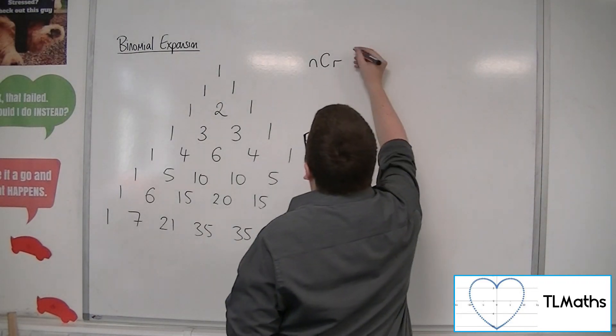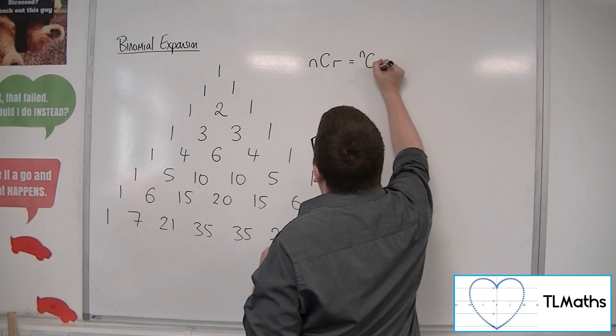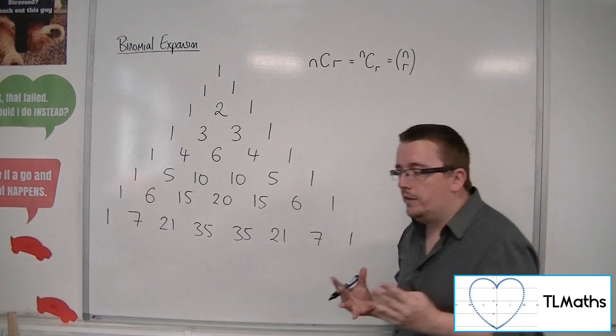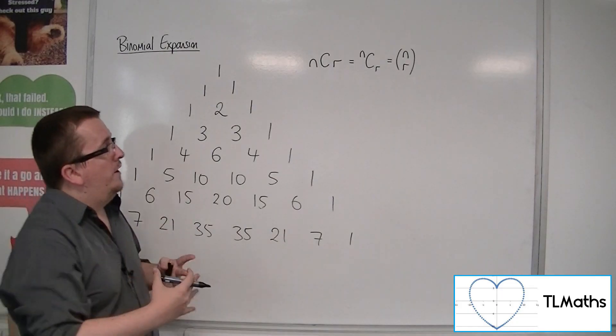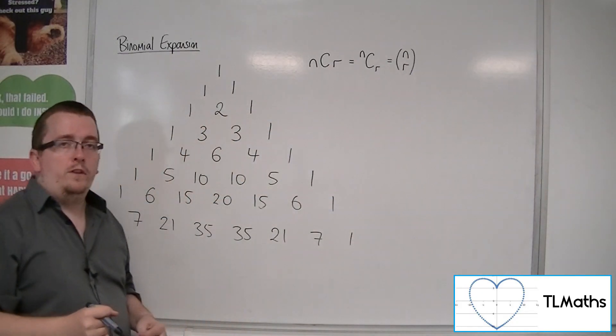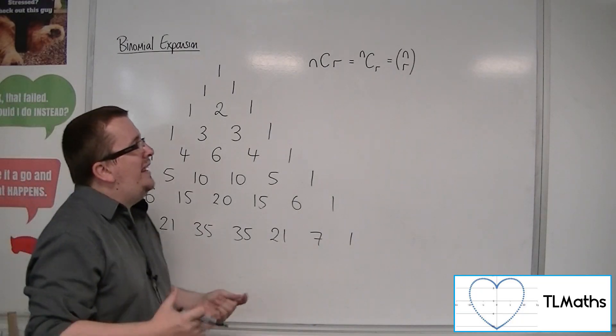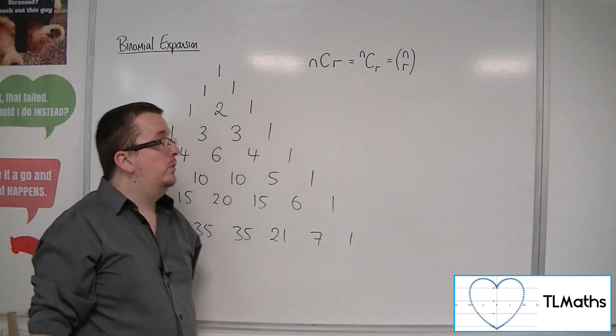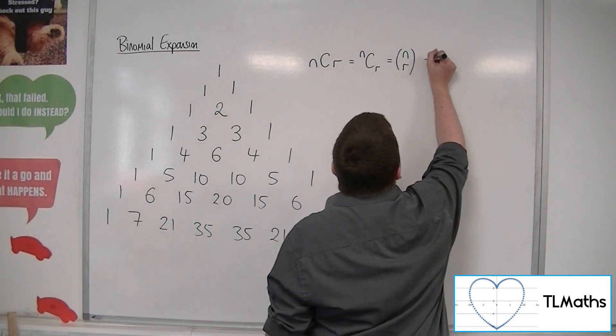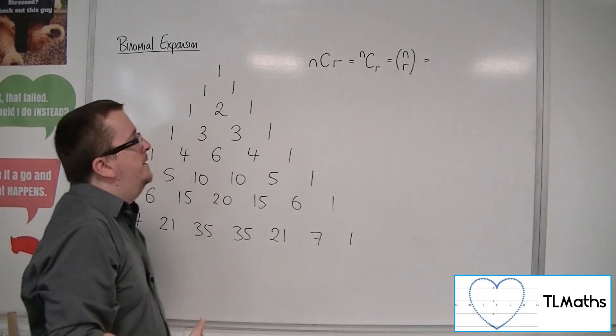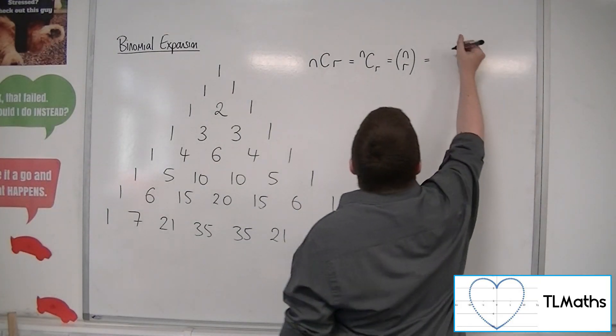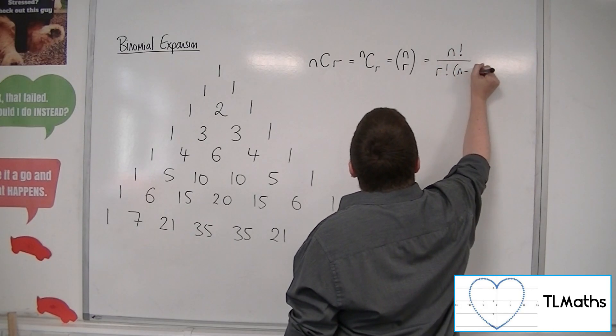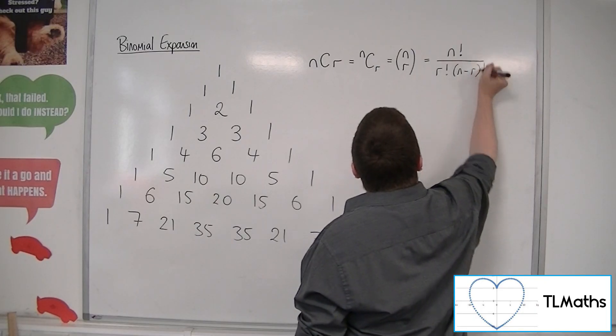This can be written in different ways: NCR or as NCR in a bracket, almost like a vector. I use that one more often because it's easier to use in a formula. This has its own formula: N factorial over R factorial times (N minus R) factorial.